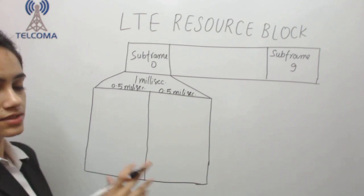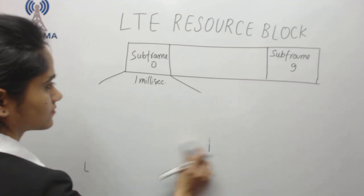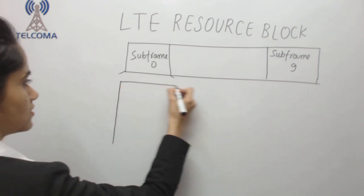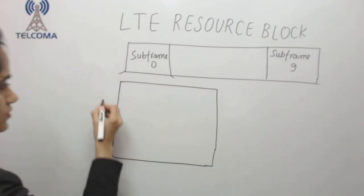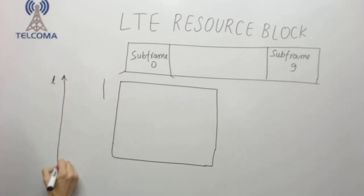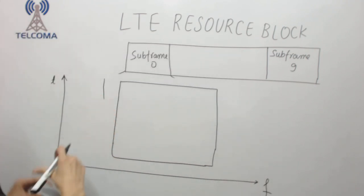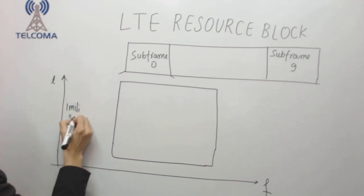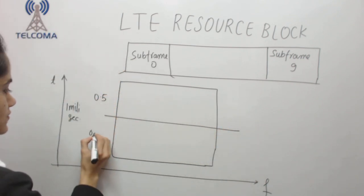So it has been divided into two equal parts of 0.5 ms each. I will make a time axis here and a frequency axis here. Now I divide the time: this portion is 0.5 ms, this is 0.5 ms, and this is 0.5 millisecond in duration.